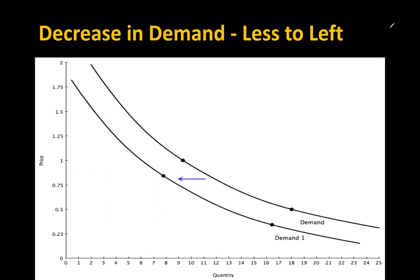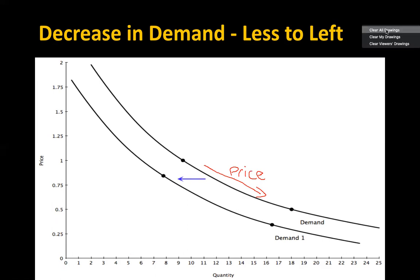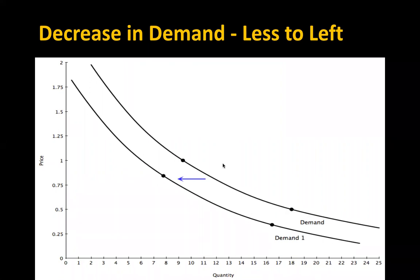The question is: what makes demand curves move left or right? When we're moving along the curve from one point to another, price is the only thing changing — that is a change in quantity demanded. But moving the whole curve requires something other than price to change your desire for that product. Remember, demand is not only the desire for something but the ability to pay for it. So what other than price could change your desire to buy something?